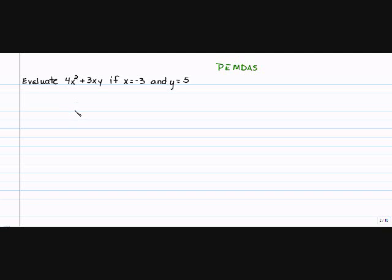Okay, it says evaluate 4x squared plus 3 times x times y if x equals negative 3 and y equals 5. And this is something I'm about to tell you. I've seen my students make this mistake over and over again. You're saying, well, this is a simple problem. It is a simple problem. But notice the negative 3.